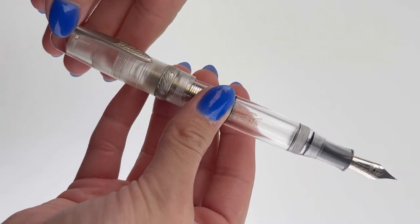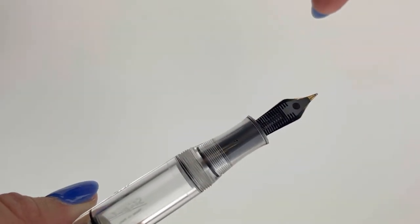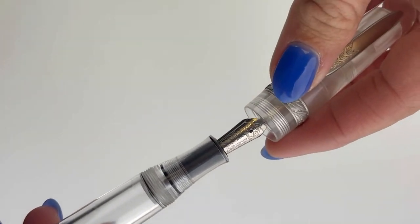The pen is postable, it's a friction post, and the back end of the barrel is rounded, as well as the top of the cap.